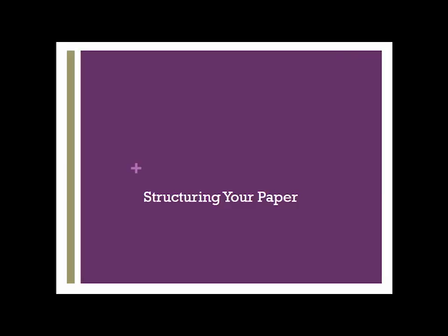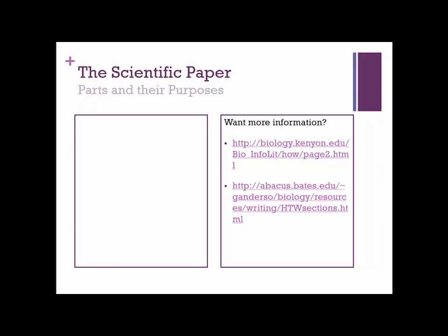A scientific paper can seem like a big giant monster and it's difficult to know how to break up the different sections. I'm going to go through the basic sections of a scientific paper — there are resources linked for more comprehensive explanation. The scientific paper is broken up into the following parts. First, the abstract, which is an overall summary of the paper in all of its different sections, about 150 words, giving your readers a snapshot of what they will find within to decide if they want to read the entire thing.